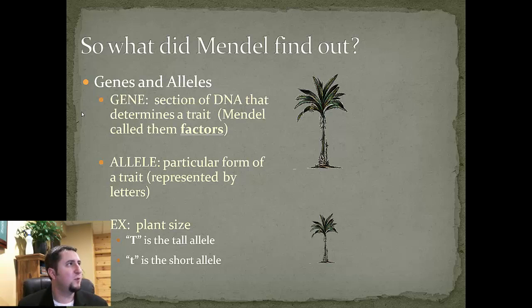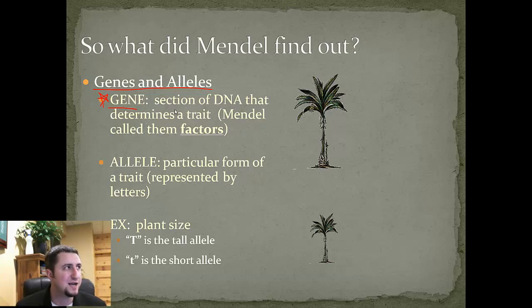What did Mendel find out? He discovered the names for things called genes and alleles. A gene is a section of DNA that determines a trait — this is one of the most important things to know in this unit. Mendel originally called these things 'factors,' but since his time we now call them genes. An allele is a particular form of a trait.